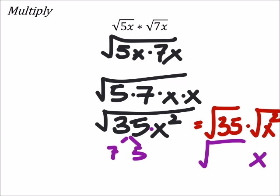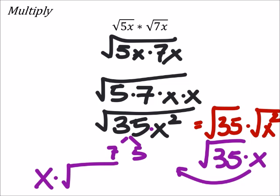And I've got the square root of 35 times that x, but notice that x is not in the square root anymore. So formally, we would want to move that to the front using the commutative property of multiplication and make that x times the square root of 35.